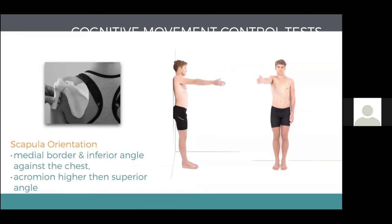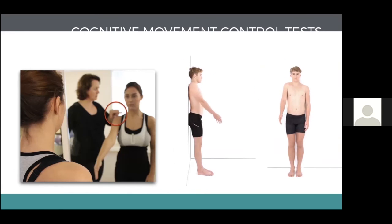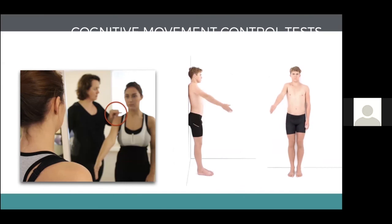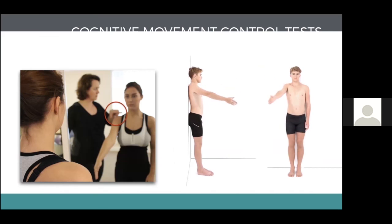We put the scapula in a good neutral position, get it out of the downward rotated position, and then get our subject to move their arm up and down. In this photo, you can see the red circle — I'm holding a pencil — and this girl has just taken her arm down to the side. You can see how the acromion has dropped away from the pencil, which illustrates that she's failing the test and her scapula is moving into downward rotation.